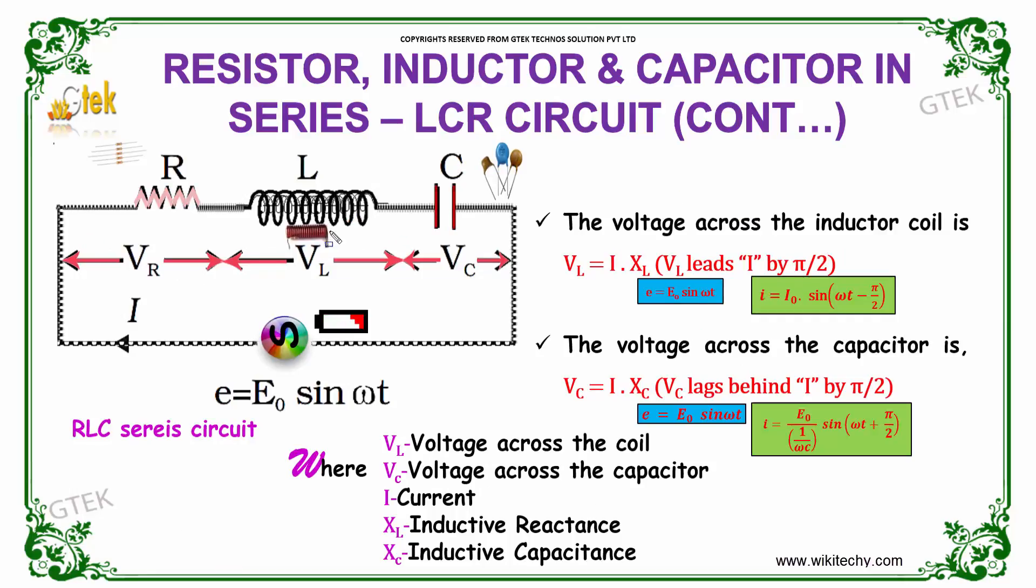The voltage across the inductor is VL, which is I into XL. VL leads the I by pi by 2.